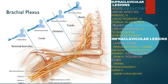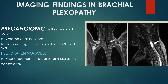In infraclavicular brachial plexopathy, there is involvement of the cords and terminal branches — from the lateral cord: lateral pectoral nerve, medial pectoral nerve, and lateral root of median nerve; from the medial cord: ulnar nerve; from the posterior cord: axillary nerve, radial nerve, thoracodorsal nerve, and upper subscapular nerve. Radiologically, however, we need only to distinguish between preganglionic and postganglionic injury.